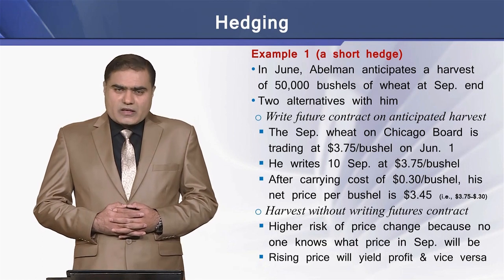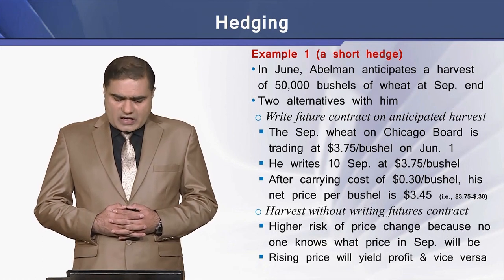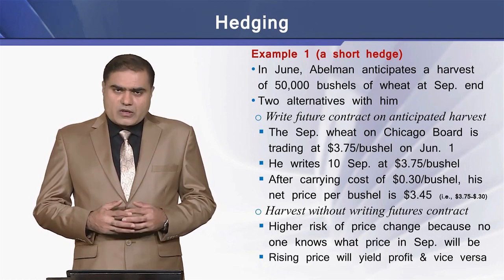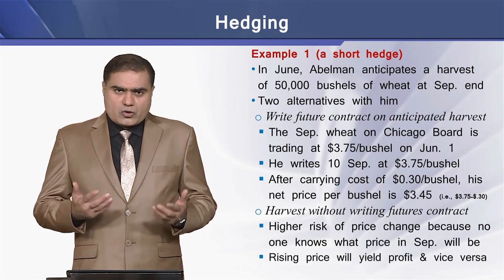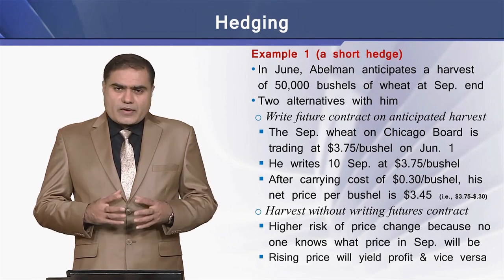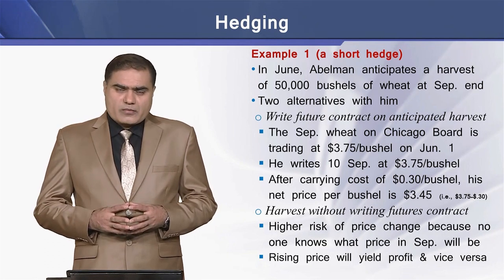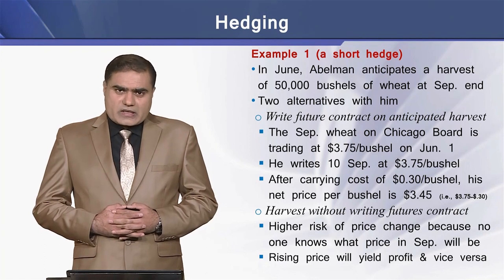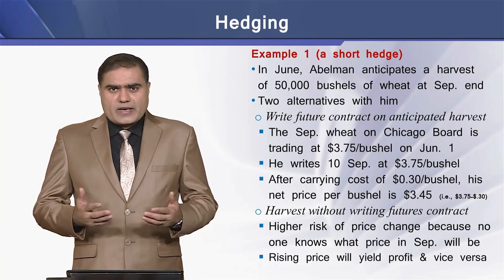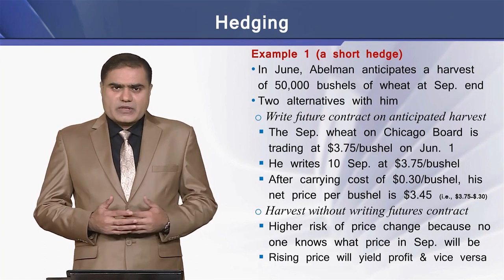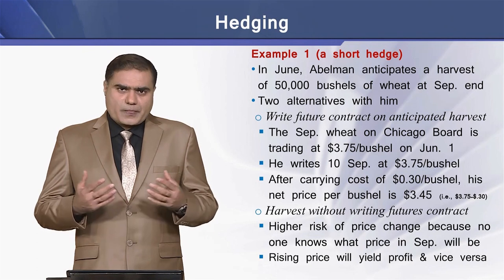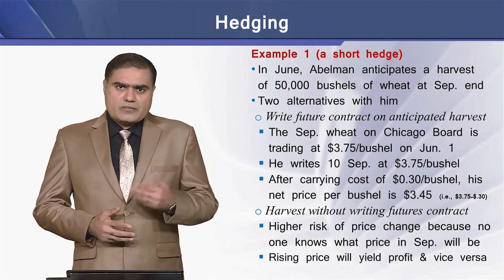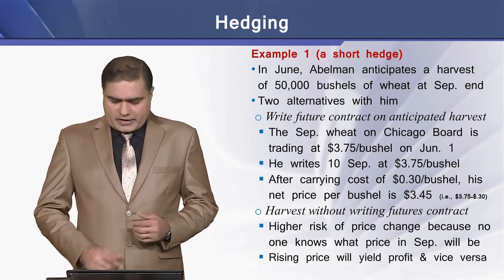In this case, there is a higher risk of price change because no one can know what price in September would be. If there is any rise in the price, Abelman would be in profit, and in case of a decline in the price, he will suffer some loss accordingly.